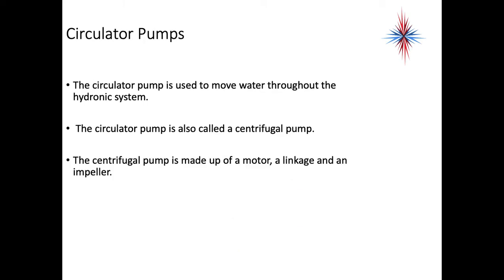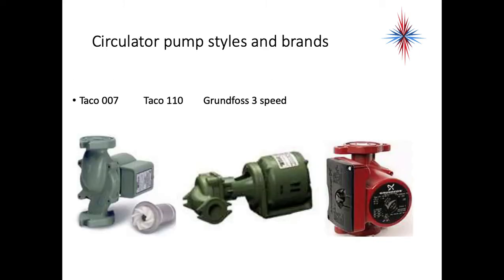The circulator pump is found on most systems and is used to move water through the hydronic system. It's also called a centrifugal pump and is made up of a motor, a linkage, and an impeller. There are several styles and brands — the Taco 007, the Taco 110, and the Grundfos three-speed pumps are the most frequently found, with the Taco 007 still being the primary one seen in most residential applications.